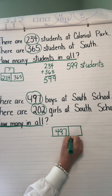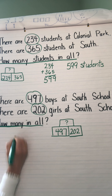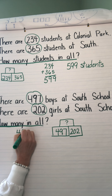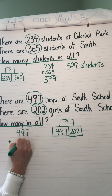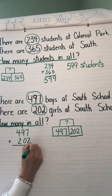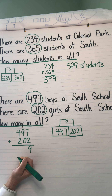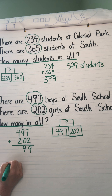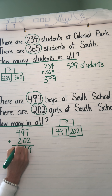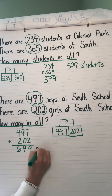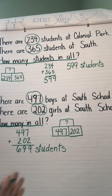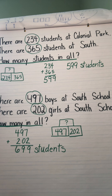On my math work I'm writing 497 plus 202. Adding my ones: 7 plus 2 is 9. Adding my tens: 9. And adding my hundreds I get 6, so 699 students. That's what your math work is today — you're going to work on more word problems and solving word problems. Do a great job, thank you!